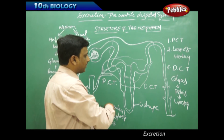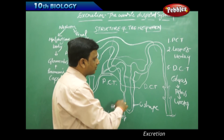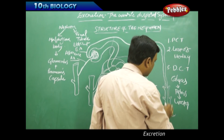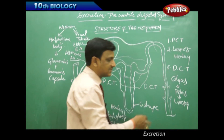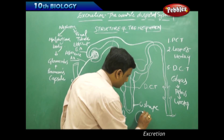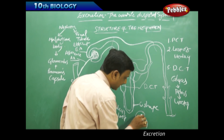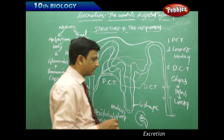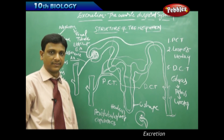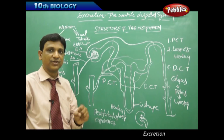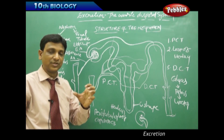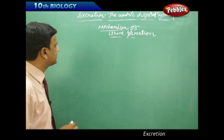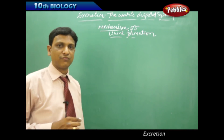The ureter carries urine to the urinary bladder. The liquid waste produced in the renal tubule passes through the calyces inside the kidney, then to the pelvis, ureter, and urinary bladder. Now let us look at the various steps involved in the formation of urine and the filtration of blood in a nephron.